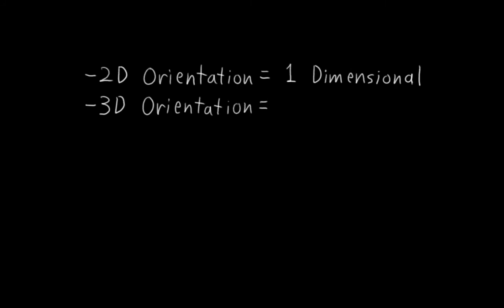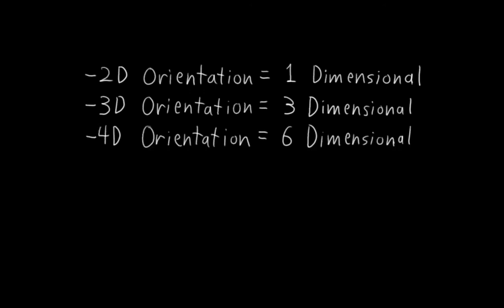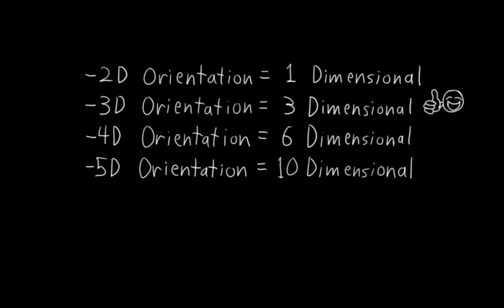So what about 3D orientations? Are they two-dimensional? Well, no, they're three-dimensional, meaning you need at least three numbers to fully specify them, which is weird. Or maybe it's not so weird. I guess what's really weird is that orientations in 4D are six-dimensional, and orientations in 5D are ten-dimensional. Come to think of it, 3D space is really the only one that makes sense. All the others are kind of freaks. Aren't you glad we live in a 3D world?